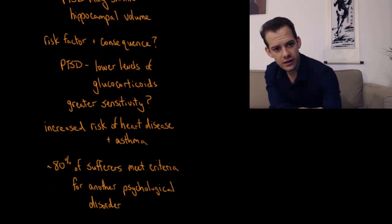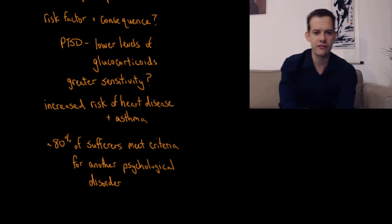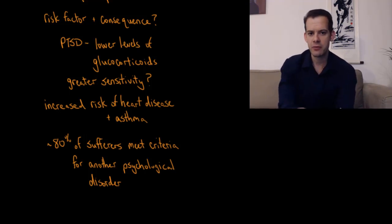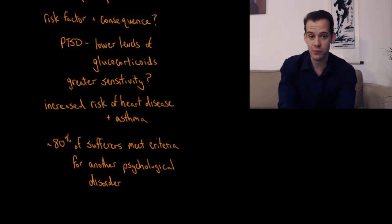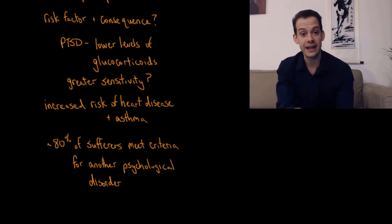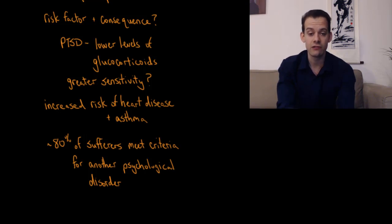Somewhat unexpectedly, people who suffer from PTSD tend to show lower levels of glucocorticoids in their bloodstreams. One explanation is that people with PTSD have greater sensitivity to these stress hormones, and this heightened sensitivity may mean that when confronted by an extreme stressor or traumatic event, they are more prone to developing PTSD.